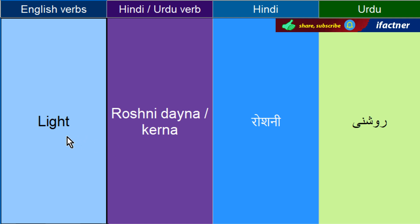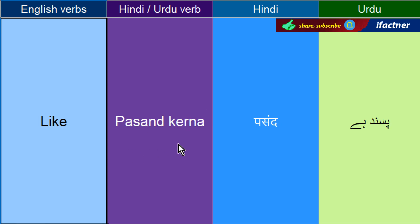Laitna — Lie. Kis cheez ko uthane ko kehtay hai — Lift. Lift it up — isko uper utha ho. Roshni dayna — Light. Please light up the room — kameray mein roshni ker day. Isko lit padha jata hai aam taur pe. Pasand karne ko kehengay — Like. I like you — mein tumhye pasand kerta hoon.